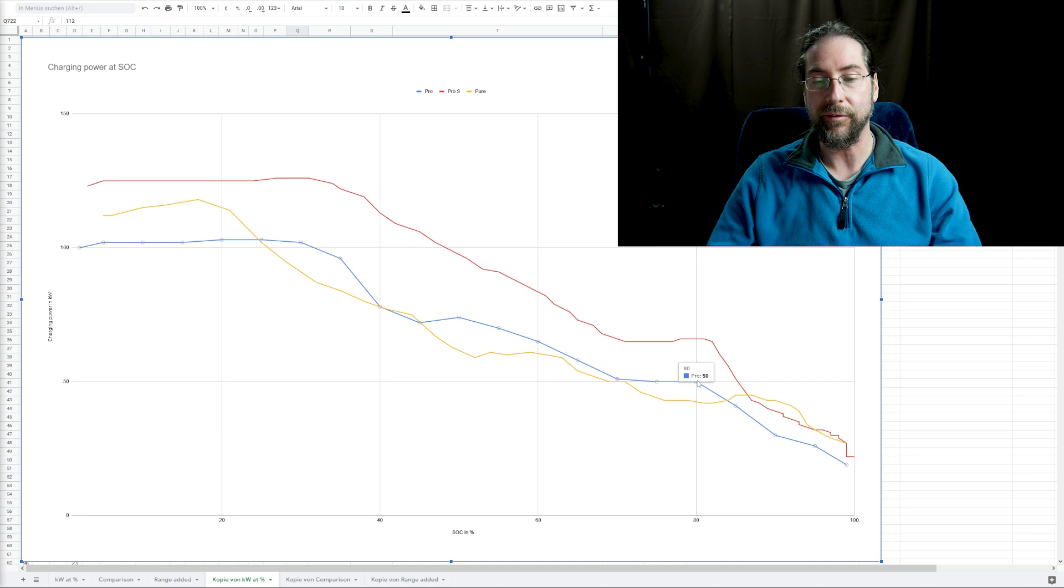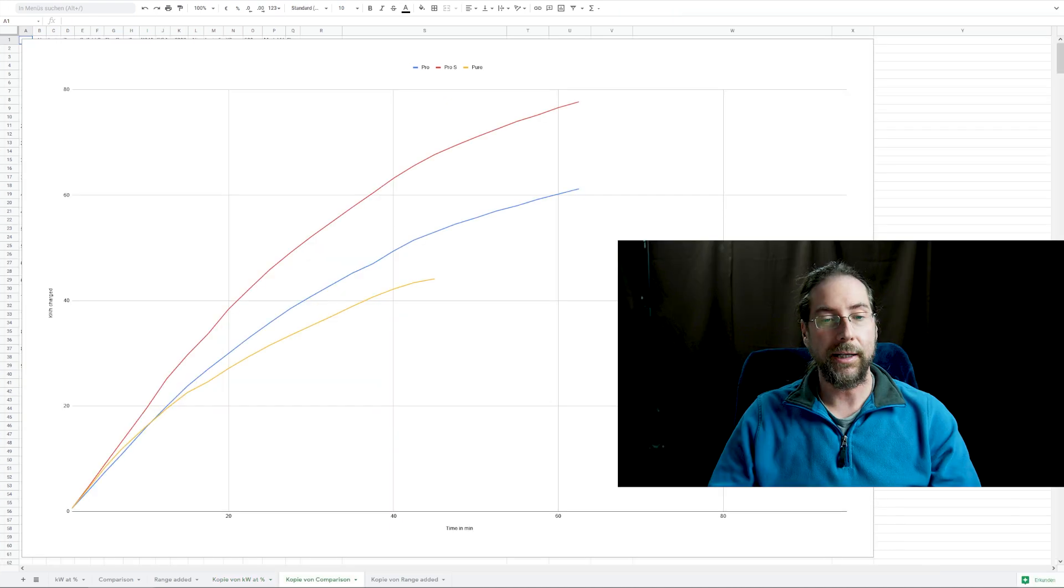Where my car I would say at 80 percent it's enough, let's leave here, the Pure is just fine. So it even stays above, but the Pro S with its 126 kilowatt stays above the Pure all the time except between 86-87 percent of state of charge. Then the Pure charges a bit better.